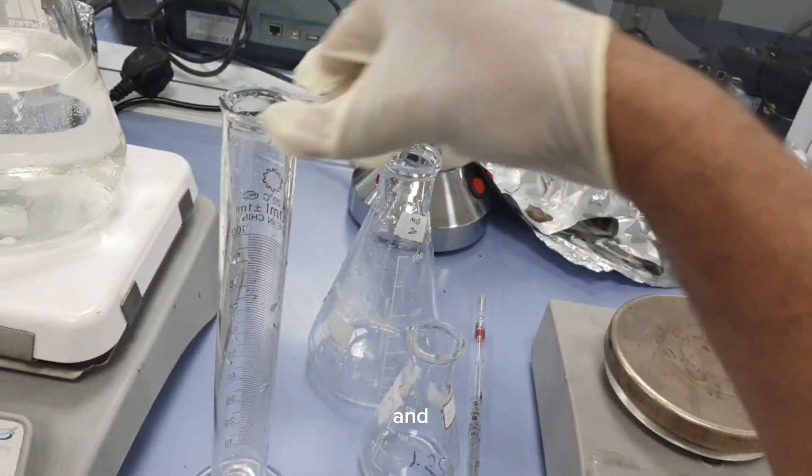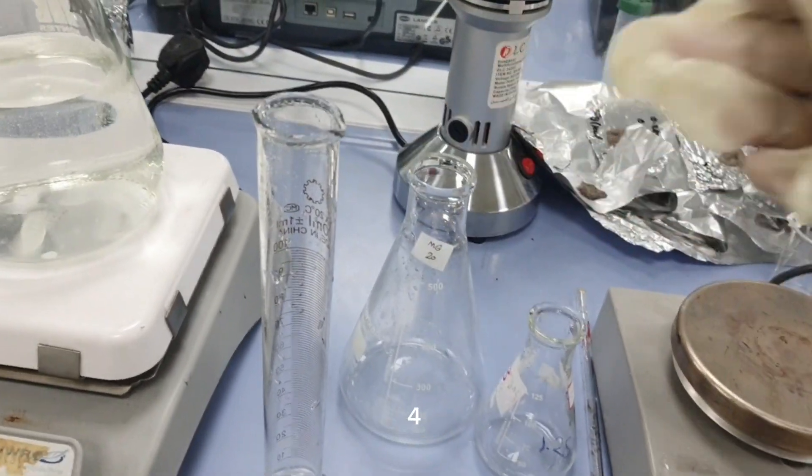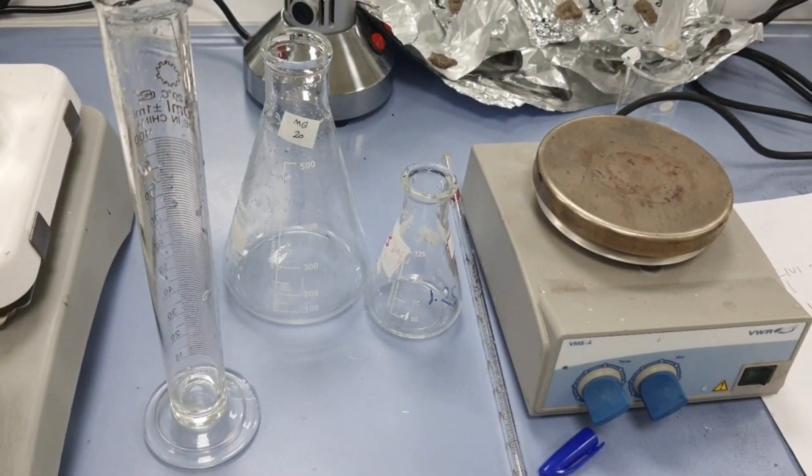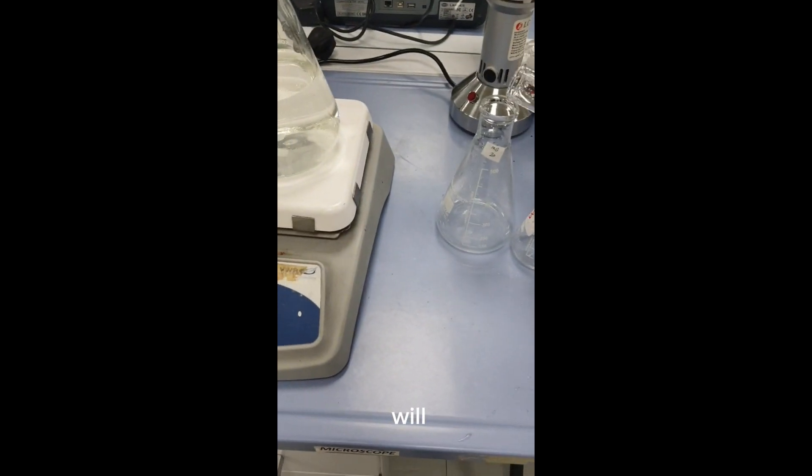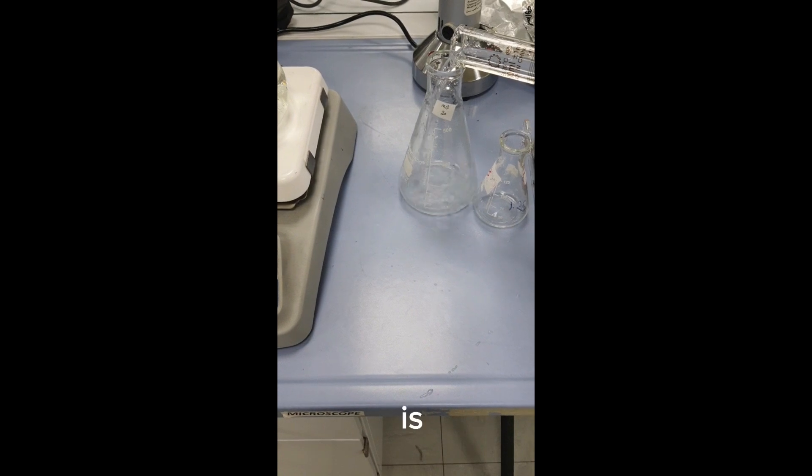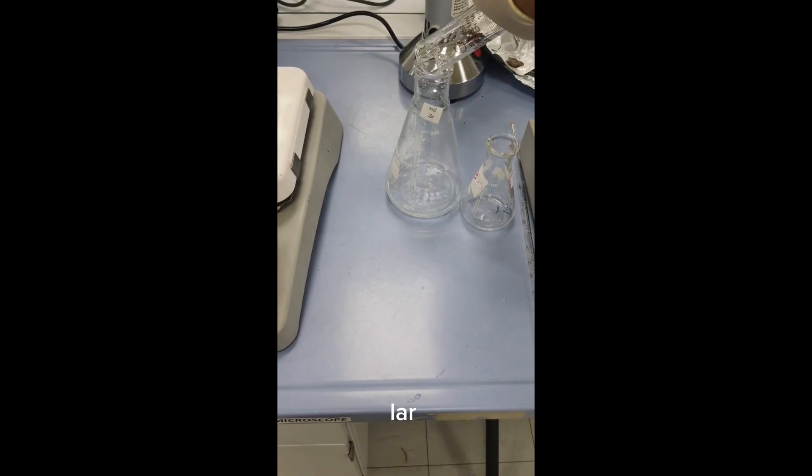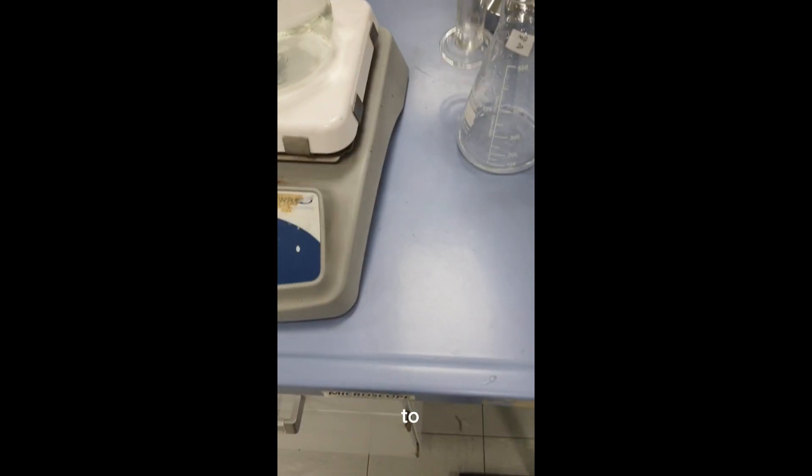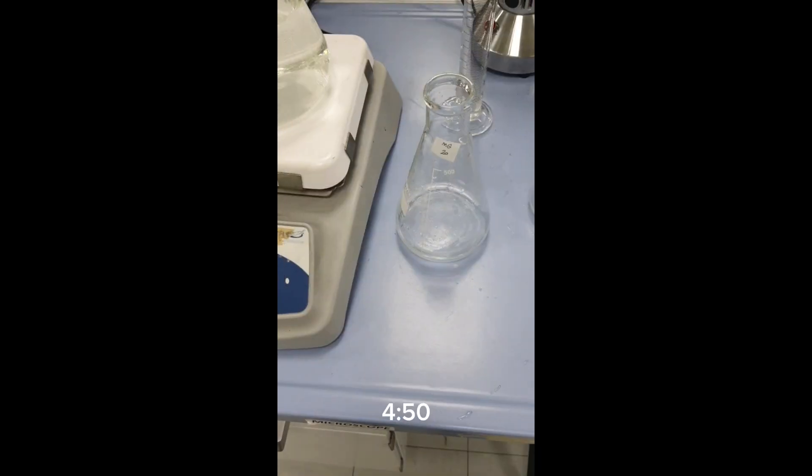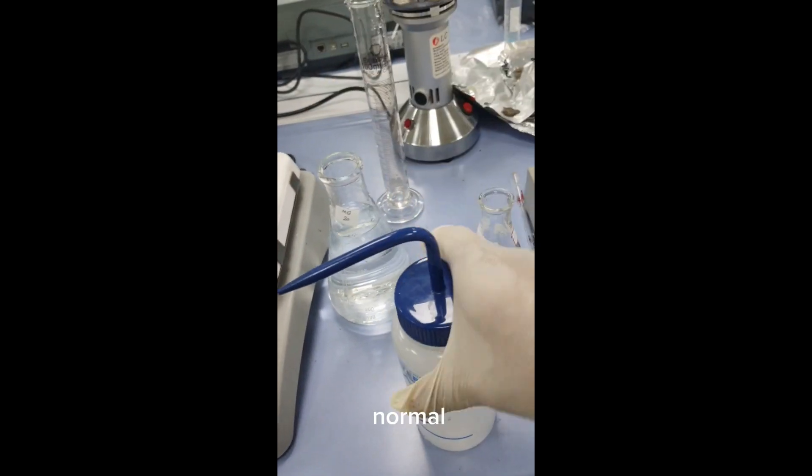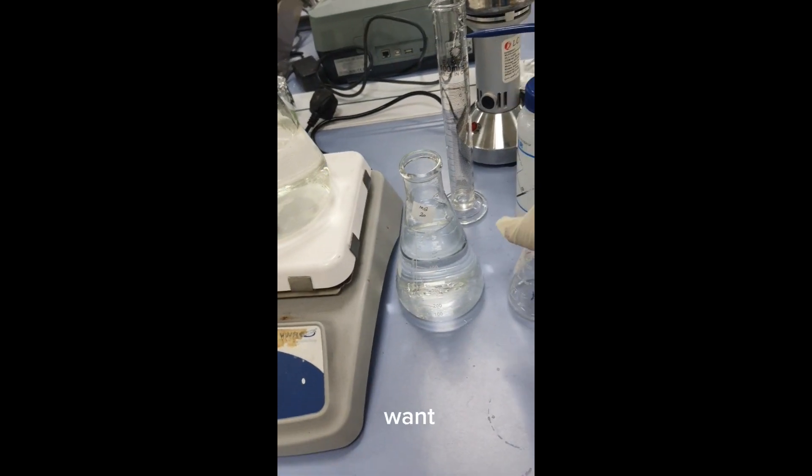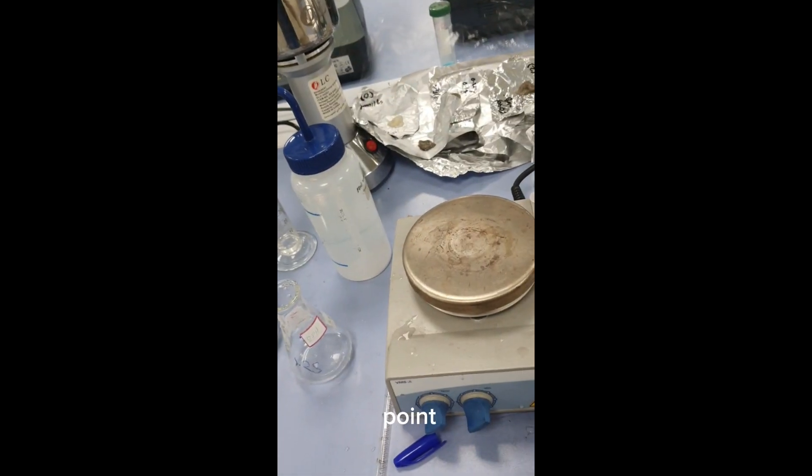You can see here this is around 50 ml from the one normal or one molar KCl. Now we add 450 ml of distilled water. This is one normal, and similarly if we want to prepare from 0.1 to 0.01, we'll see the calculation.